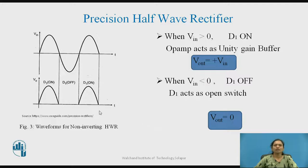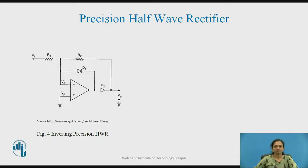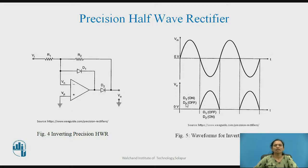At higher frequencies, this circuit may not give precise rectification. Therefore, we add one more diode in the same circuit. This is called the modified precision half wave rectifier, where the signal is connected to the inverting input of the op-amp and the non-inverting input terminal is grounded. During the positive half cycle, D1 conducts but diode D2 will not conduct, because this is the inverting terminal.